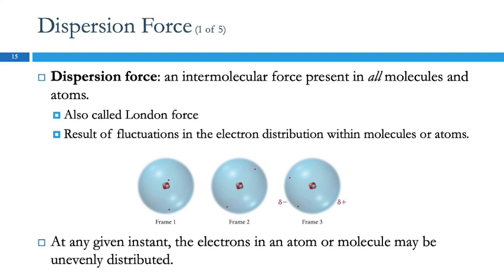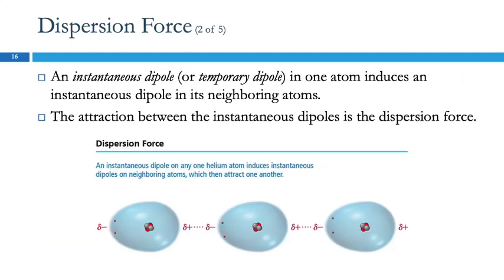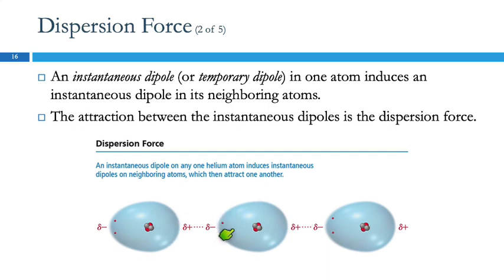At any given instant, the electrons in an atom or molecule could be unevenly distributed. This is called an instantaneous or temporary dipole. When one atom gets lopsided like this, it can induce a dipole in the neighboring atom—the slight positive charge attracts the electrons on a neighboring atom, causing a dipole on that one, which induces a dipole on the next one.